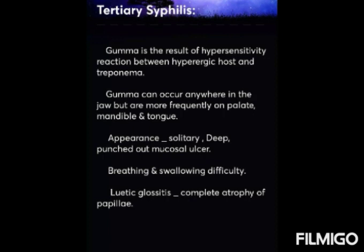Gumma in tertiary syphilis is due to a chronic destructive granulomatous process which can occur anywhere in the body. It is the result of a hypersensitivity reaction between the hyper-allergic host and Treponema. It occurs more frequently on the palate, mandible, and tongue. Its appearance is a solitary deep punched-out mucosal ulcer, and there is difficulty in breathing and swallowing.